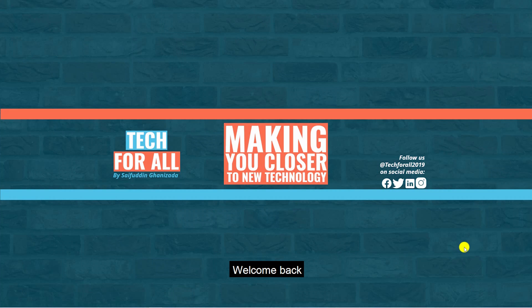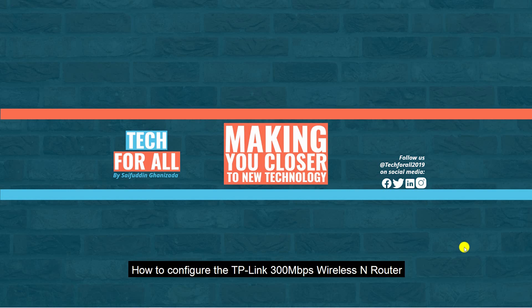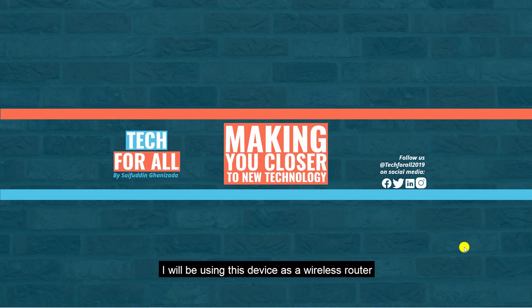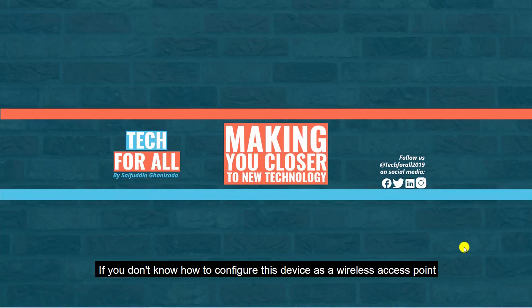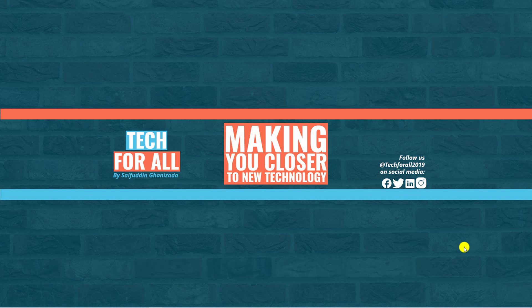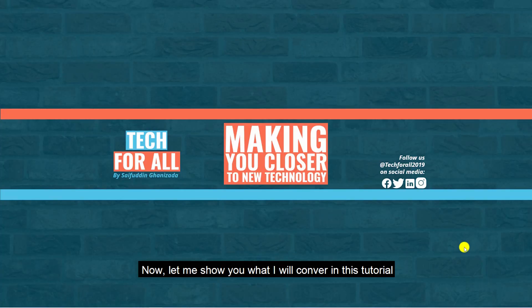Hey guys, welcome back. This is Saifuddin Ghanizala with another tutorial. In this video I will show you how to configure the TP-Link 300 Mbps wireless router. The model of the wireless router is TL-WR841N. I will be using this device as a wireless router. If you don't know how to configure this device as a wireless access point, check out this video.